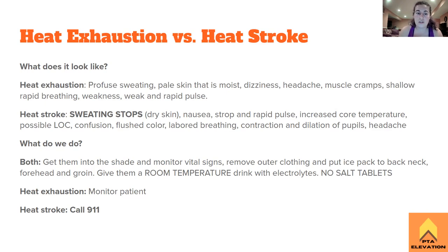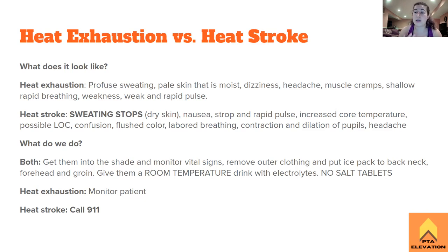For both heat exhaustion and heat stroke: get the patient into shade, monitor vital signs, remove the outer layer of clothing, and place ice packs on the back of the neck, forehead, and groin — areas with many sweat glands that cool core temperature fastest. For hydration, give a drink with electrolytes or room temperature water — not ice cold water, as that shocks the system and worsens the situation. Have them sip slowly.